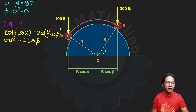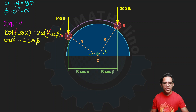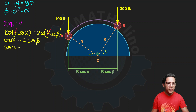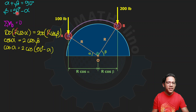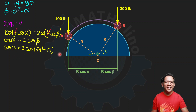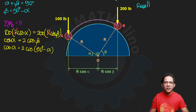So cosine alpha equals 2 cosine of (90 degrees minus alpha). To solve for alpha, we need a trigonometric identity. Recall that the cosine of (90 degrees minus theta) is actually equal to the sine of theta.